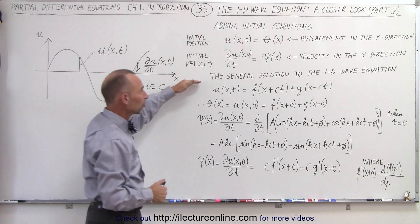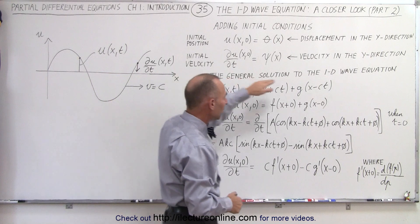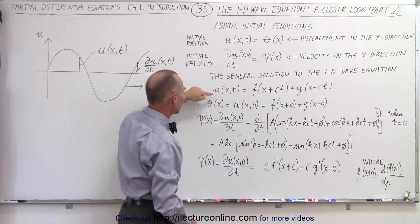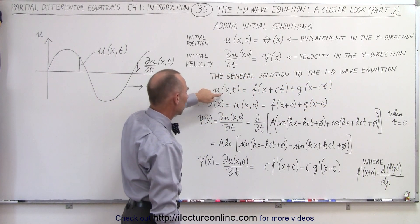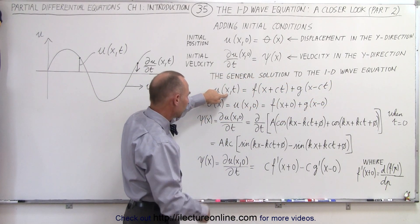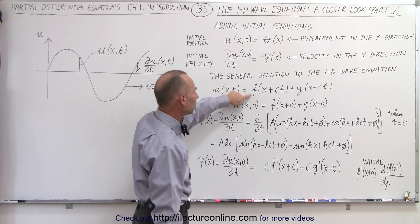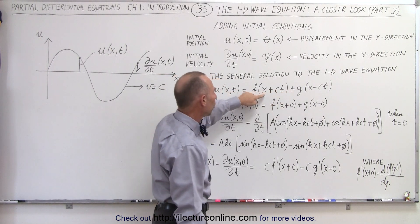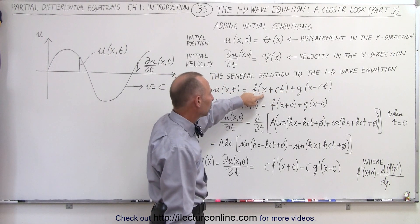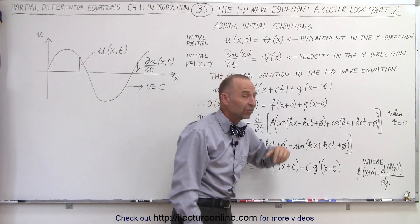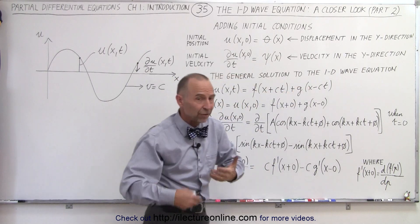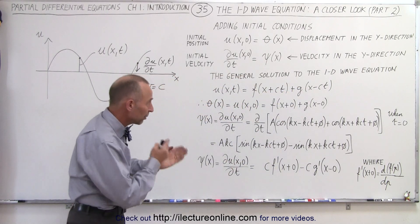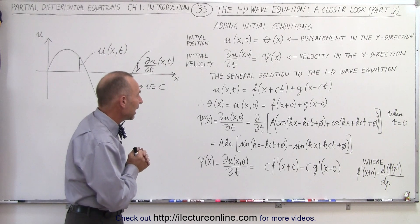Now, the general solution to the one-dimensional wave equation looks like this. It's the function u as a function of x and t, which can be represented as two functions — one of x plus ct, and one of x minus ct — c being the velocity of the wave, x being the position, t being the time.